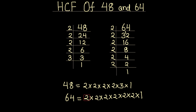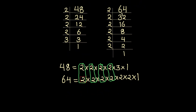Let's circle the common factors. This 2 is common in both numbers, one more 2 is common, this 2 is common, and another 2 is common to both numbers. So we have these common factors. Now let's write the HCF.